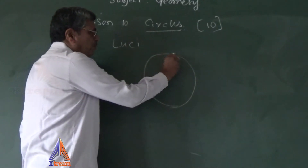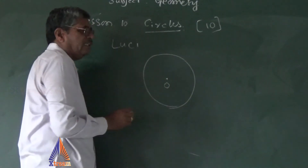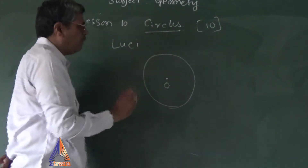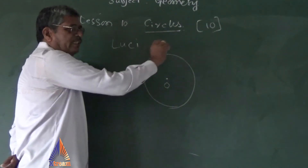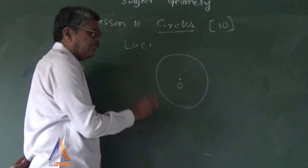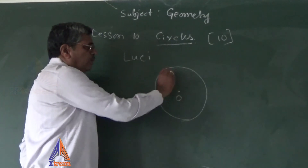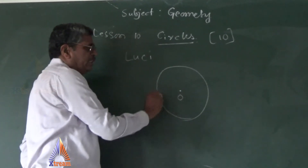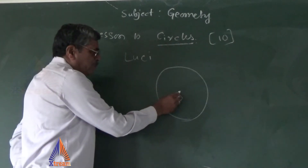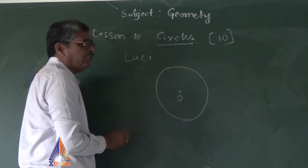Circle means the locus of a point which moves at a constant distance from a fixed point. The fixed point is called the center of the circle, denoted by the letter O. The curved surface of a circle is commonly called the circumference of the circle.